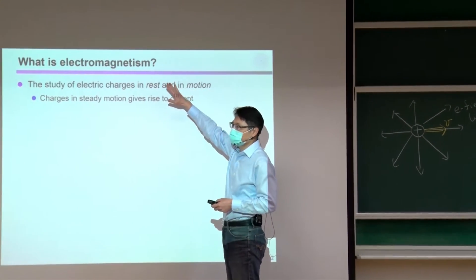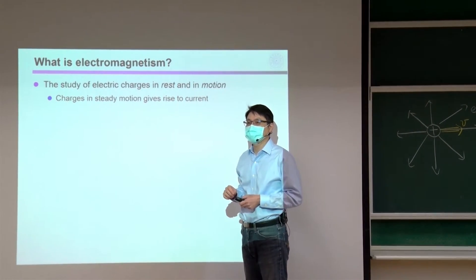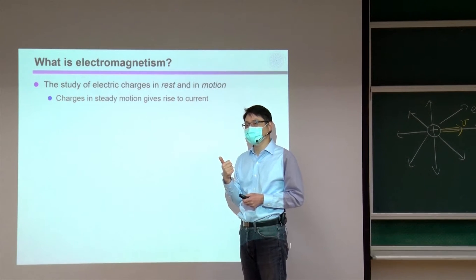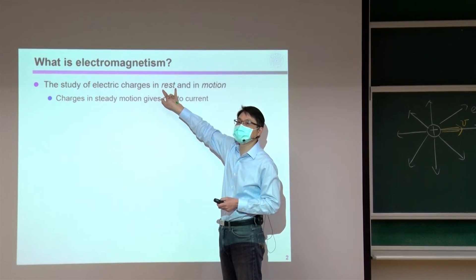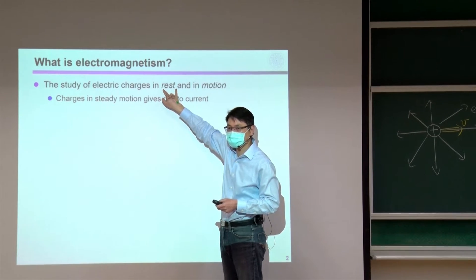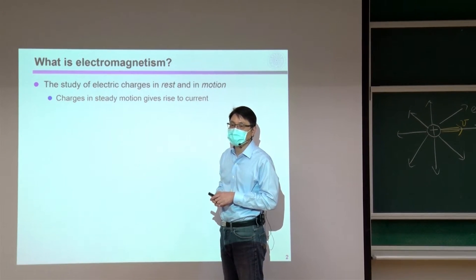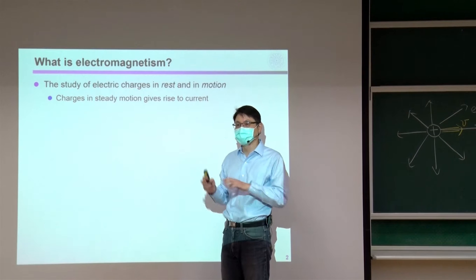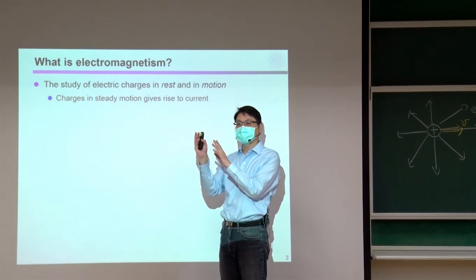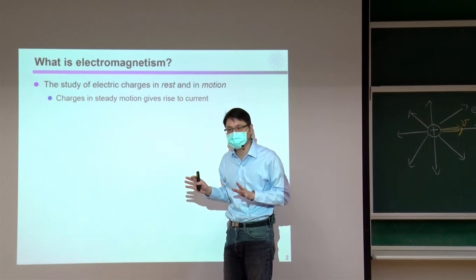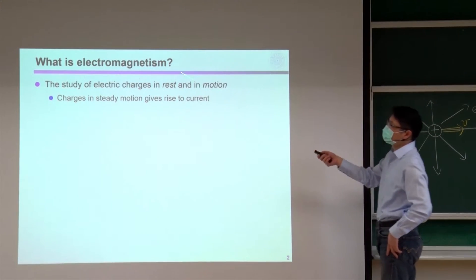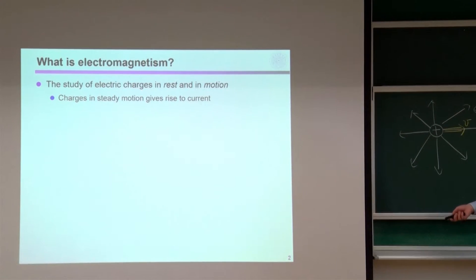So the way this textbook is organized is for electric field, we first learn the steady state, nothing is moving. And then for magnetic field, also time stationary, nothing is moving. And then in the end, something moves.